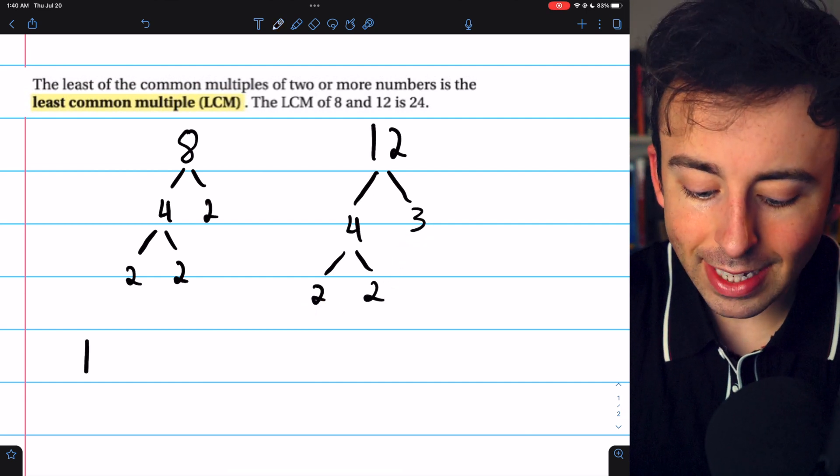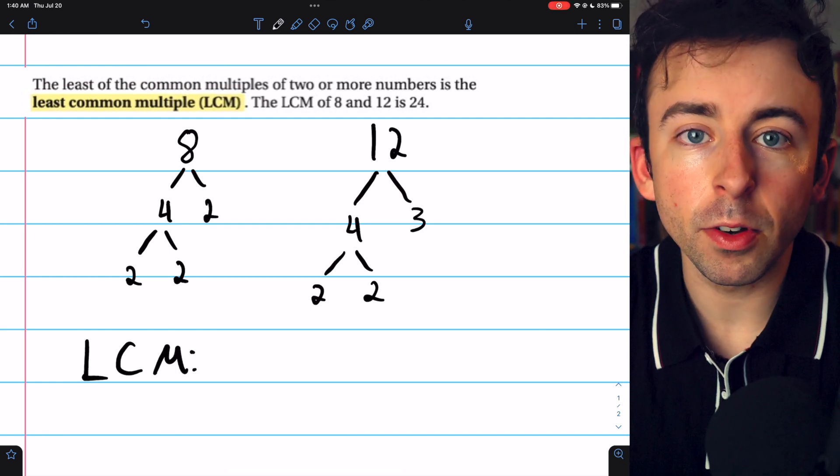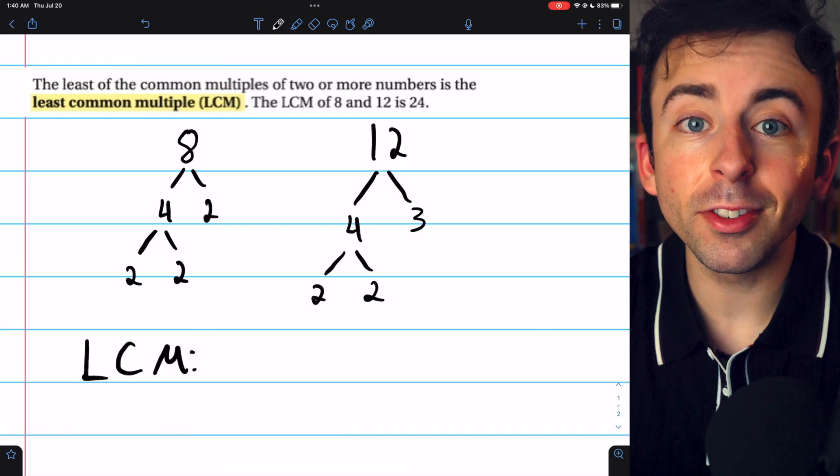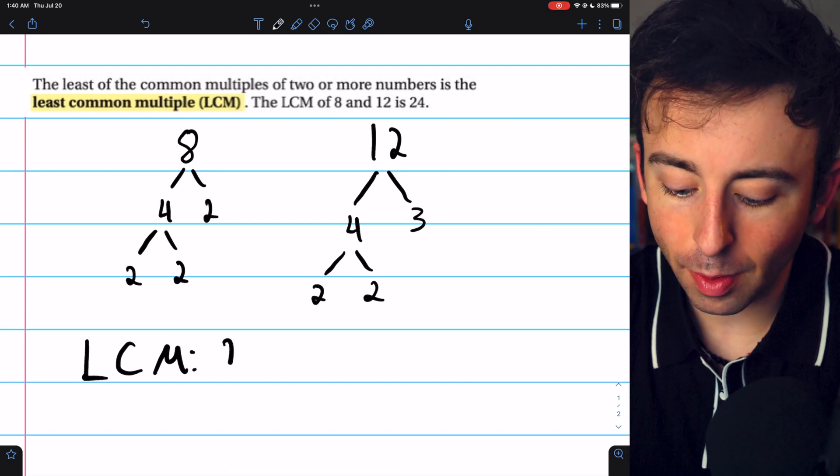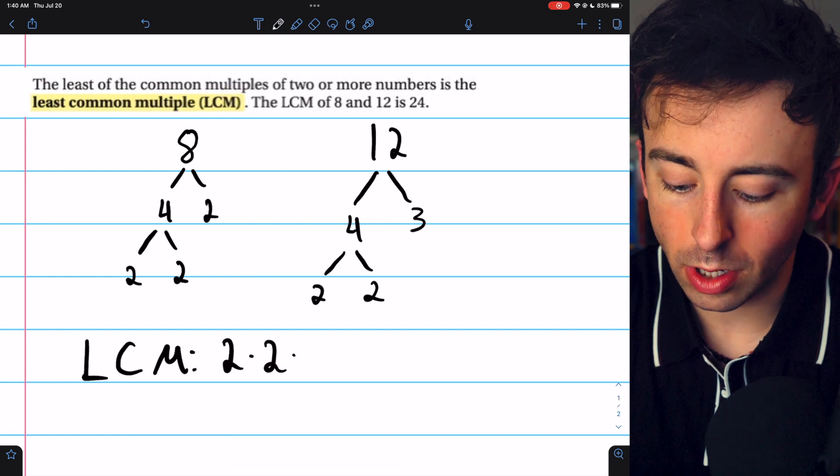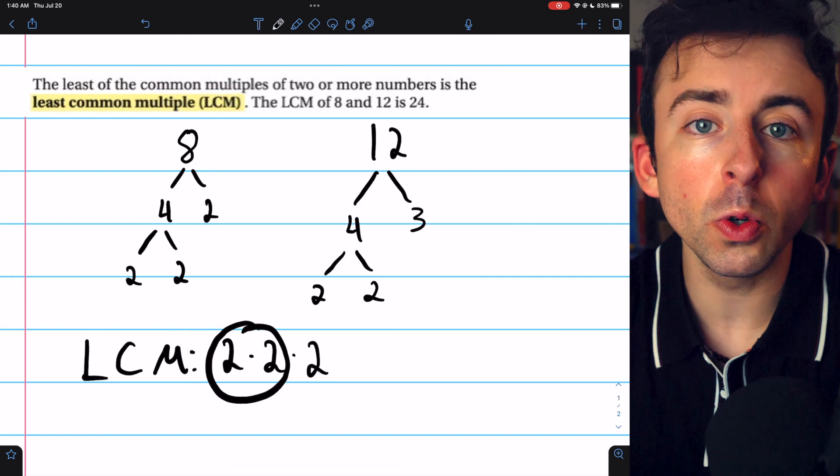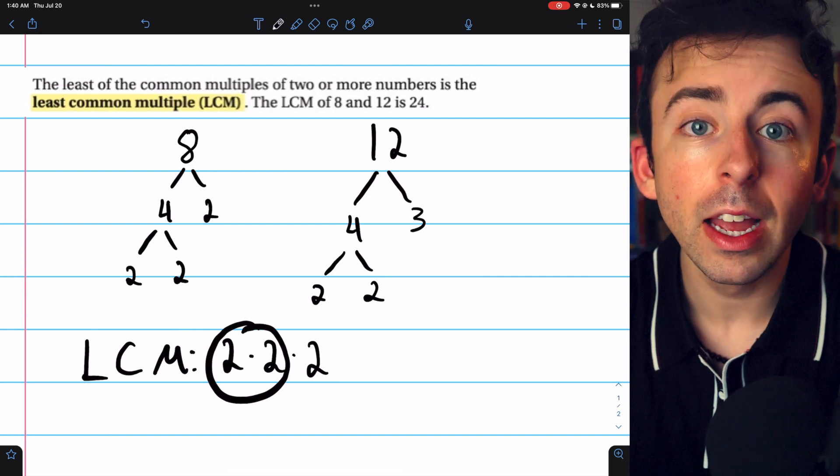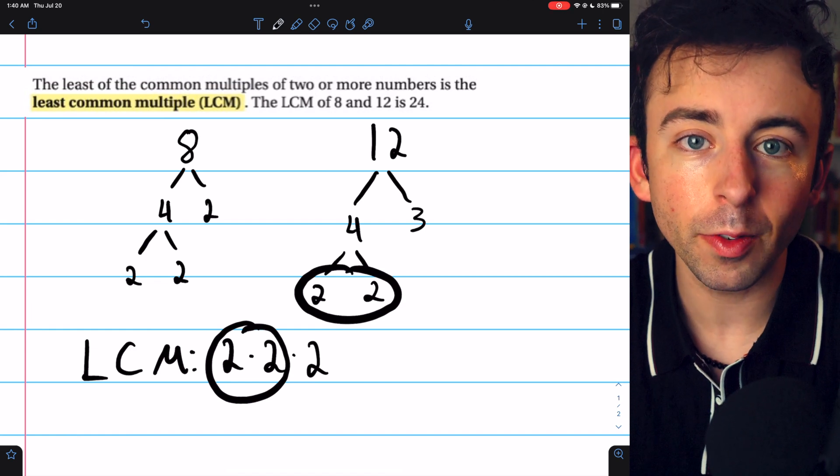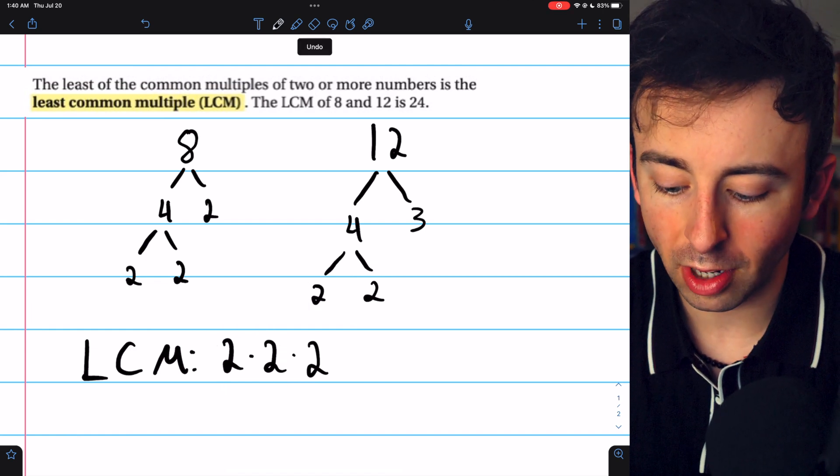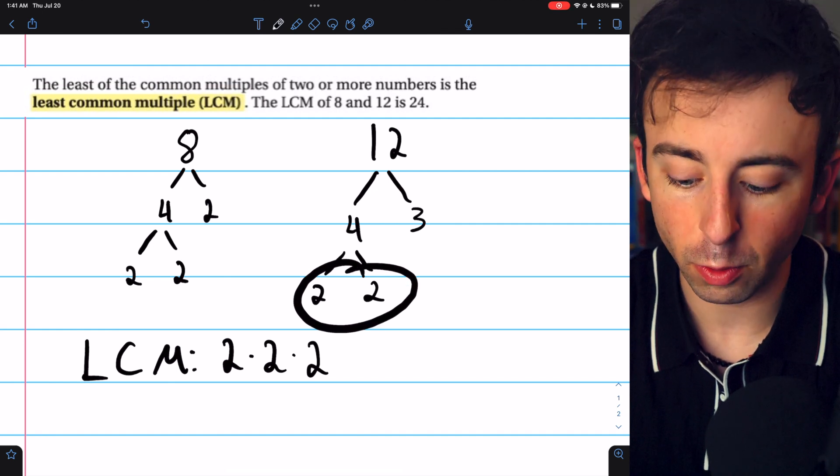Then you can find the least common multiple of the two numbers by multiplying together the prime factors, just don't duplicate the common factors. By that, I mean we take the prime factors of 8, 2 times 2 times 2, but that already includes two factors of 2. So we don't need to include those again when we look at the factors of 12. So all the factors of 2 just come from the 8, and that covers the 2s that are in the factors of 12.